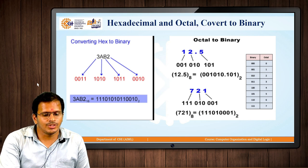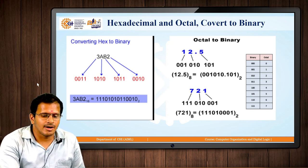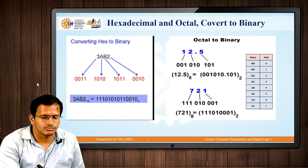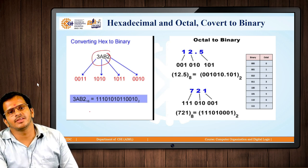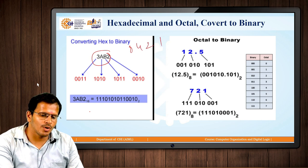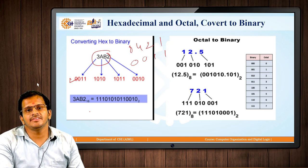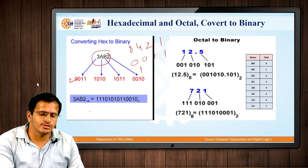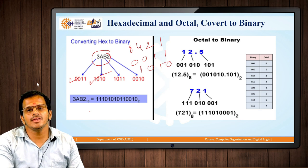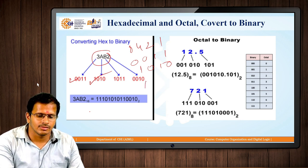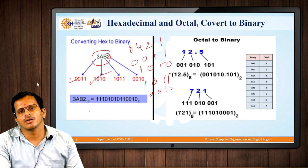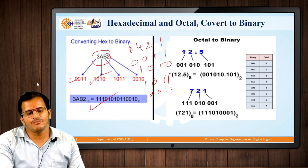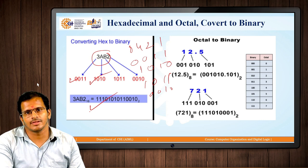In this example of 3AB2: 3 in 8421 is 0011, A is 10 represented as 1010, B is 11 represented as 1011, and 2 is 0010. Combining all these numbers gives us the hexadecimal to binary conversion.